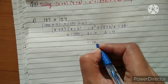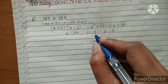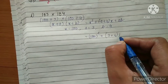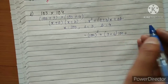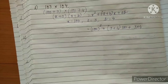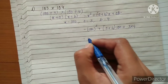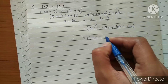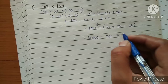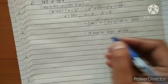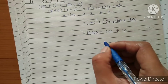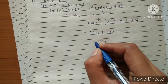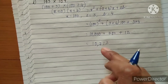Substituting: x squared means 100 squared, plus a plus b means 3 plus 4, multiplied by x which is 100, plus a times b which is 3 times 4. So 100 squared is 10,000; 3 plus 4 is 7; 7 times 100 is 700; plus 3 times 4 is 12. Adding same place values: 2 plus 0 is 2, 1 plus 0 is 1, 7 plus 0 is 7, giving the answer 10,712.